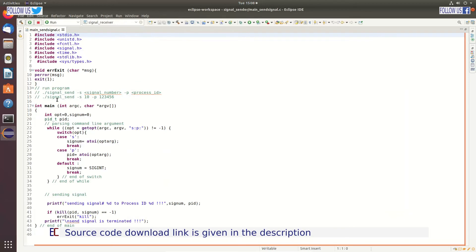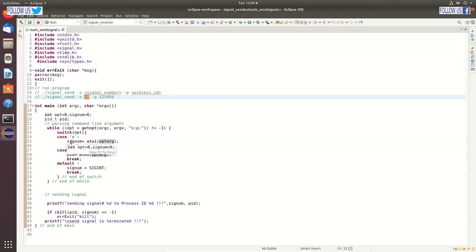We will run this program like this: signal_send and hyphen S. We have to pass signal number and use hyphen P to pass process ID. So to pass these arguments, we will use getopt standard library function. And we have to pass argument C and argument V and we have to pass a string: S colon, P colon. Because we are using S and P with argument. For example, argument S will be followed by integer numbers. We have to use colon after S. Similarly, we are using colon after P because we will pass process ID to it. In case of S, opt argument will contain the string representing signal number. This will be converted into integer and integer value will be stored into the SIGNUM variable. In the same way, process ID will be stored into the PID variable.